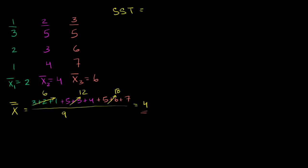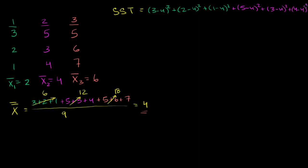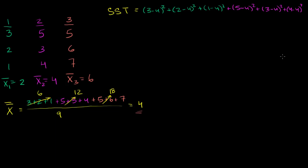So the total sum of squares is going to be equal to: (3 minus 4) squared, plus (2 minus 4) squared, plus (1 minus 4) squared. Then in purple: plus (5 minus 4) squared, plus (3 minus 4) squared, plus (4 minus 4) squared. And then the last three data points: plus (5 minus 4) squared, plus (6 minus 4) squared, plus (7 minus 4) squared.